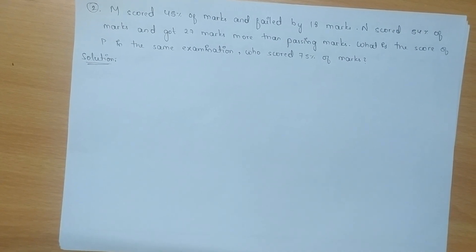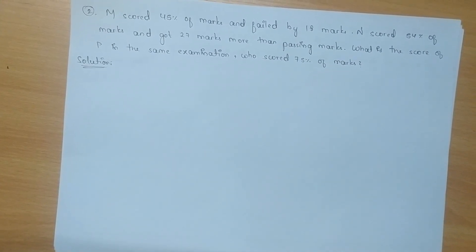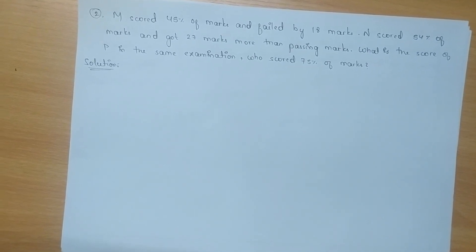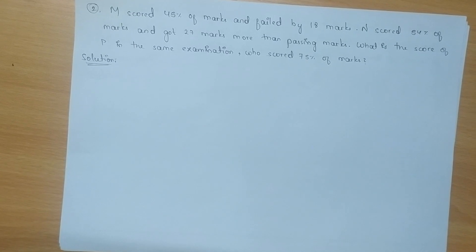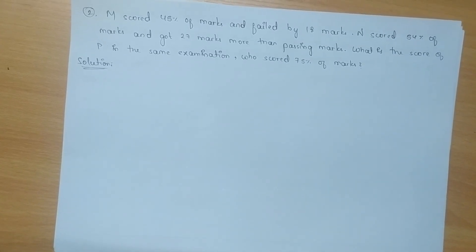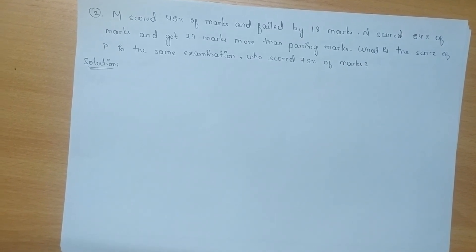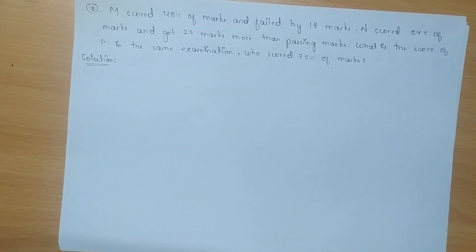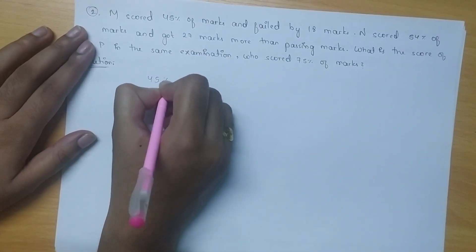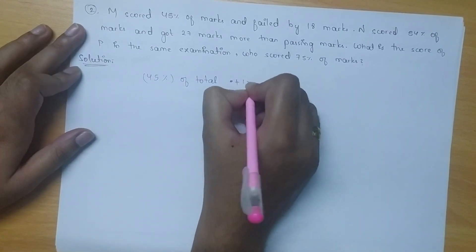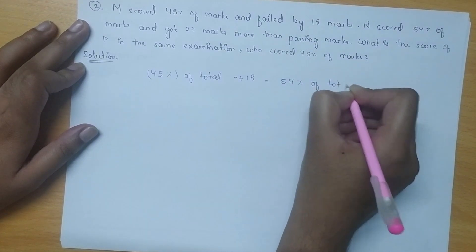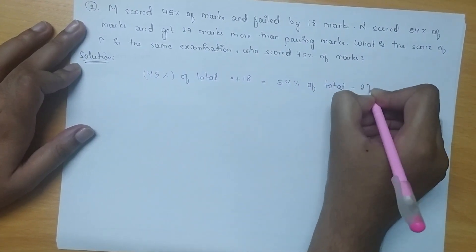M scored 45% of marks and failed by 18 marks. N scored 54% of marks and got 27 marks more than the passing marks. What is the score of P in the same examination who scored 75% of marks? Here we have to find out the total marks first in order to find out 75%. It is given that 45% of total plus 18 marks is equal to 54% of total minus 27 marks.